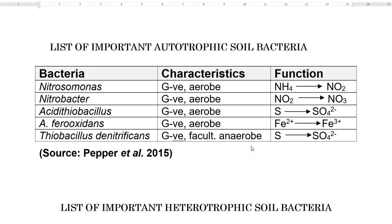In continuation of the previous lecture on soil bacteria, in this lecture we are going to see what are the dominant groups of autotrophic bacteria present in the soil system. Autotrophic refers to those that are able to fix their own carbon requirement. This population constitutes small numbers but plays some major roles.